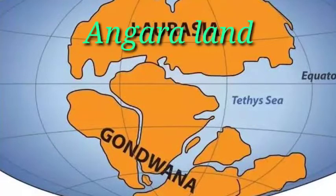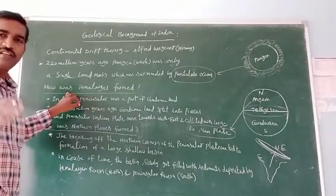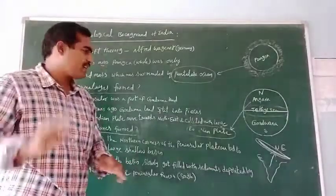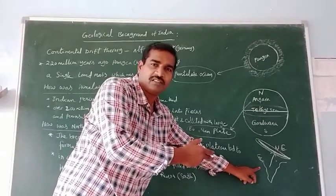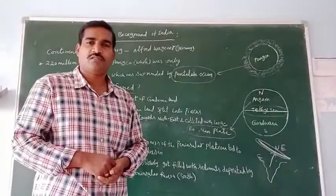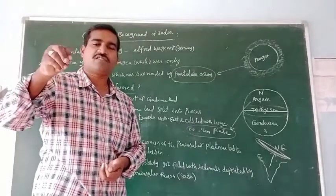Angara land is also known as the Eurasian land or Eurasian plate. Now let us discuss about how the Himalayas were formed. The Indian peninsular plateau is also a part of Gondwana land, and the Indian peninsular plateau is one of the most ancient landmasses in the world.